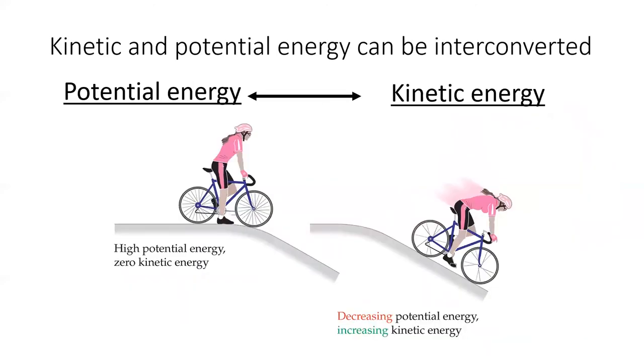Kinetic and potential energy can be interconverted, such as when a cyclist starts rolling down a hill.